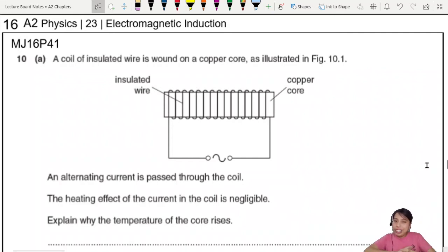We start off this question with a coil around a copper core. Then you send alternating current through the coil.